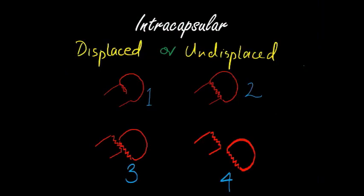Firstly, we'll consider the intracapsular fractures, i.e. those above the intratrochanteric line. There's a classification called Garden's classification — drawn here as one, two, three, and four. The important thing to take away is whether the distal fragment is displaced or not. Garden one and two are not displaced, whereas Garden three and four are displaced. If you recall the anatomy of the vasculature we discussed, if the fragment is displaced there is a high risk of disrupting that blood flow, compared to if it's not displaced.